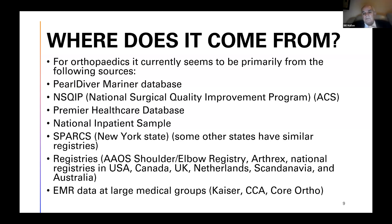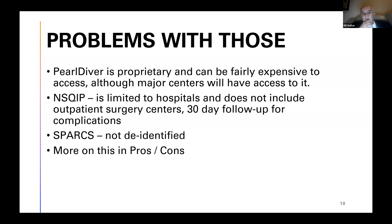There are problems with all of these databases. They're all proprietary to different degrees. Pearl Diver is expensive, but major centers like Duke or Johns Hopkins can certainly get access to it. NSQIP is limited to hospitals and only has 30-day follow-up for complications. SPARCS, the New York State Registry, is not de-identified, which is certainly a problem.